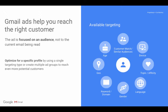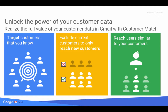Let's see how Gmail ads can help you reach the right customer. Keep in mind that the ad is focused on an audience, not on the current email being read. Available targeting options are customer match or similar audiences, device, topic, affinity targeting, language, gender, keyword or domain that the user has been seeing in their email, geographic location, and age. We recommend optimizing for a specific profile by using a single targeting type, and you could also create multiple ad groups to reach even more potential customers.